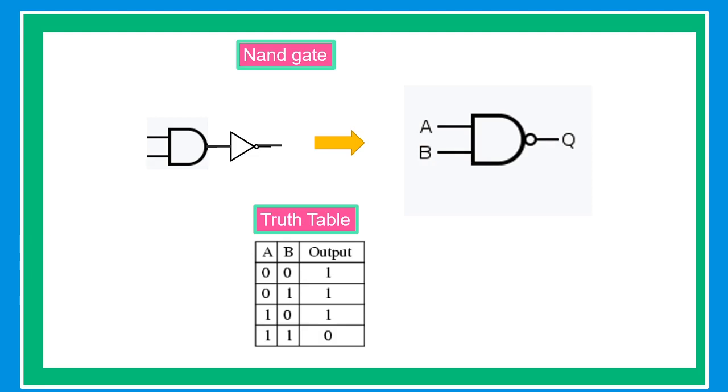When A is 0 and B is 1, the output is 1. When A is 1 and B is 0, the output is 1. And when both A and B are 1, the output is 0.